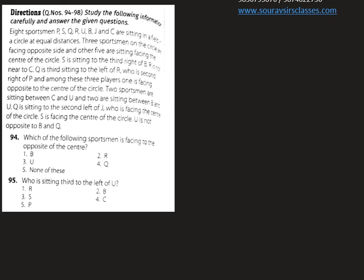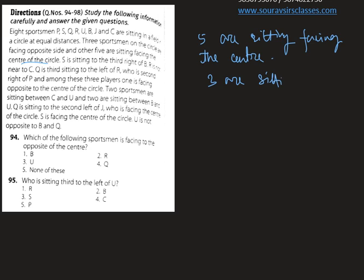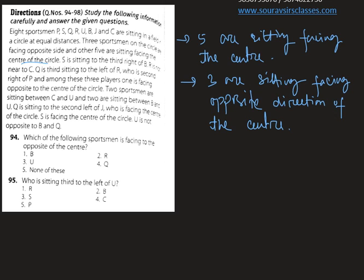Eight sports persons — P, S, Q, R, U, B, J, and C — are sitting in a field in a circle at equal distances. Three sportsmen on the circle are facing the opposite side and the other five are sitting facing the center. Three are sitting facing the opposite direction of the center. Now, S is sitting to the third right of B.